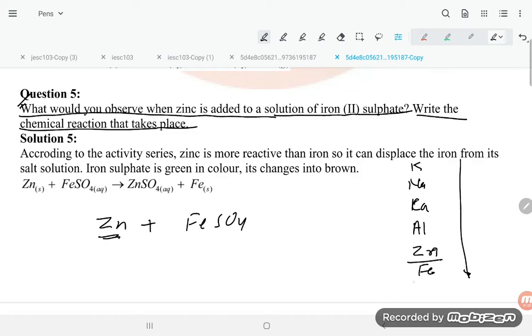Zinc is above iron in the series, so zinc will displace the iron. It will give ZnSO4 plus Fe. According to the reactivity series, zinc is more reactive than iron, so it can displace the iron from its salt solution.